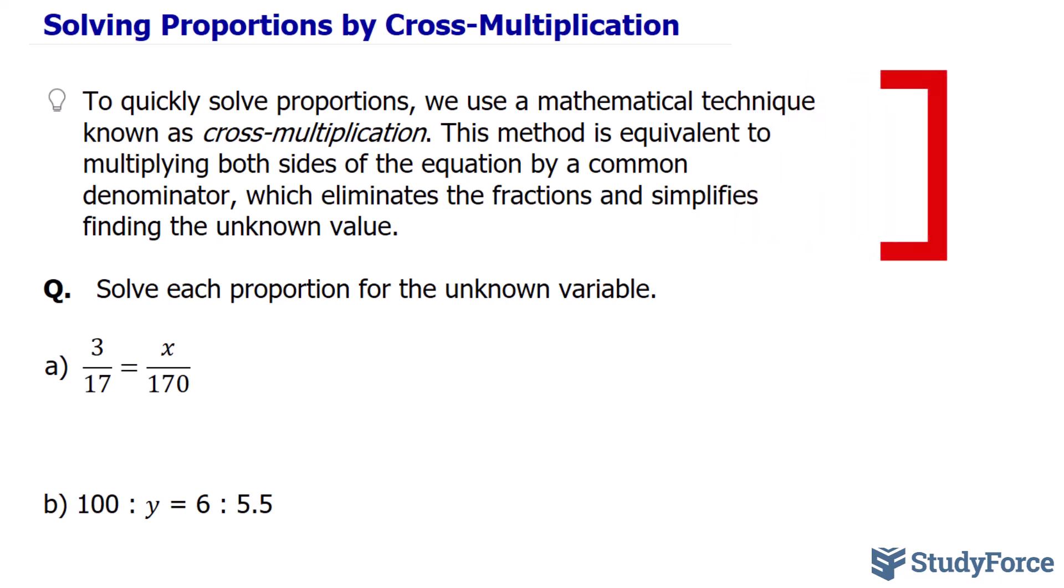To quickly solve proportions, we use a mathematical technique known as cross-multiplication. This method is equivalent to multiplying both sides of the equation by a common denominator, which eliminates the fraction and simplifies finding the unknown value.